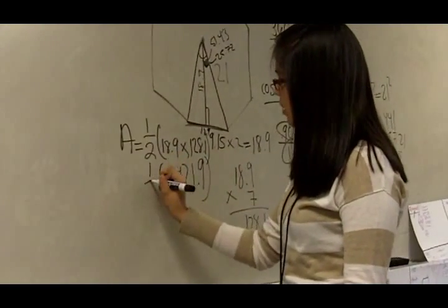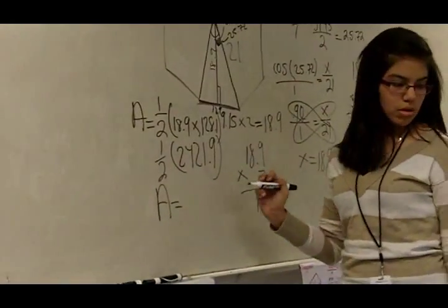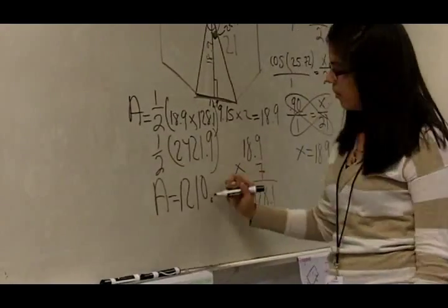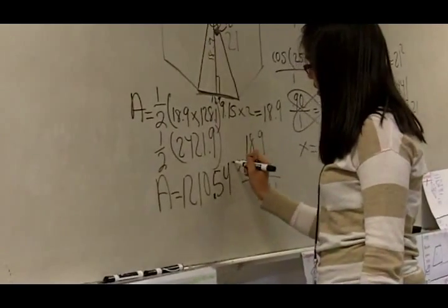One-half times 18.9 times 128.1, your area equals 1210.545.